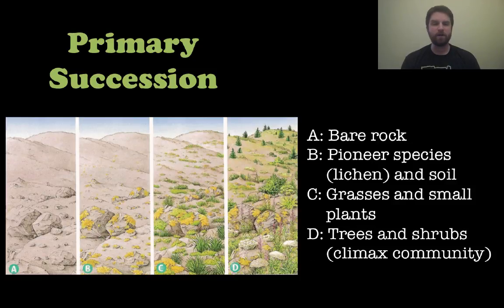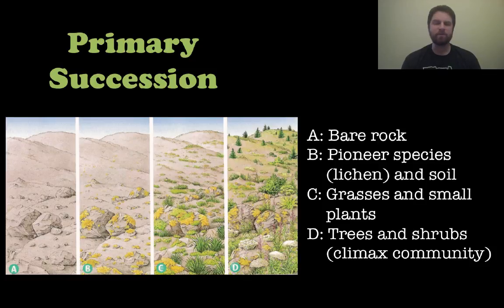Looking at a couple of examples, you go from picture A on the left all the way through picture D on the right. Picture A is where primary succession starts — on bare rock. In picture B you have some pioneer species, the first species to arrive, usually things like lichen and a little bit of soil. Picture C shows some grass and small plants. By picture D, we have the climax community — the most diverse community — with trees and shrubs.